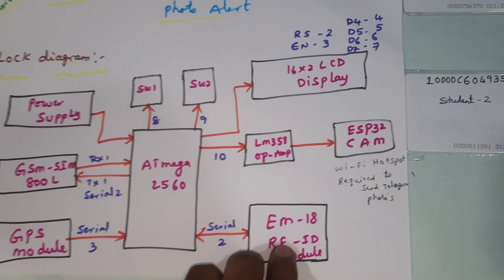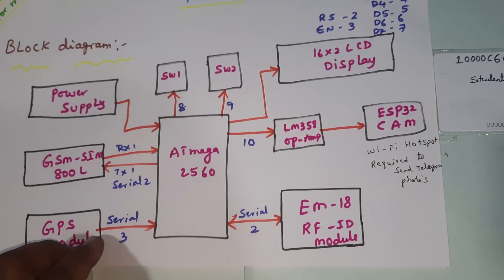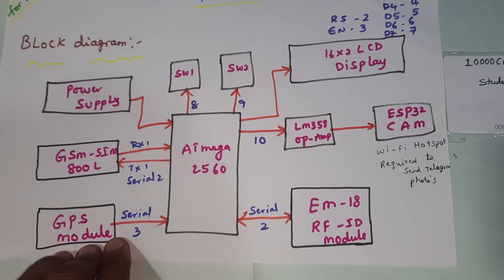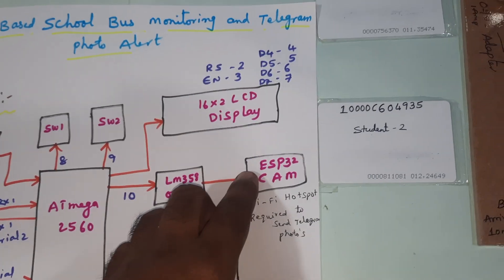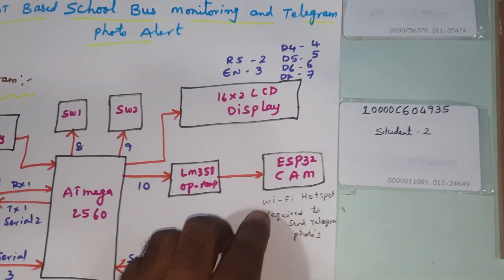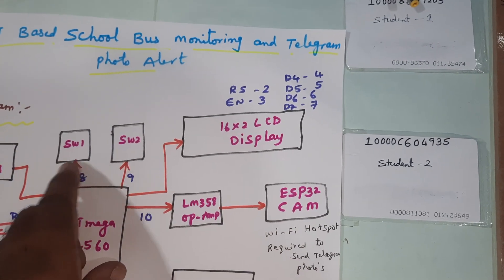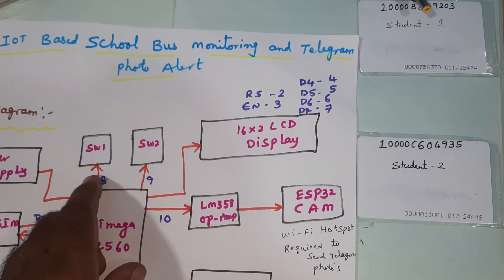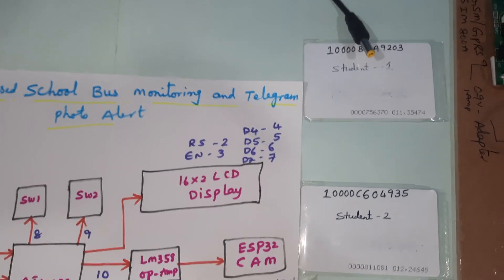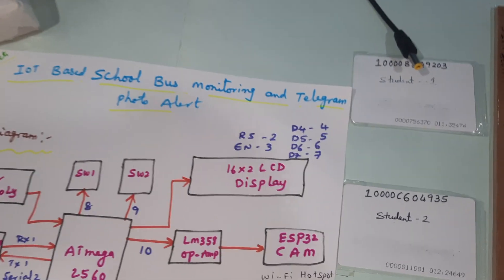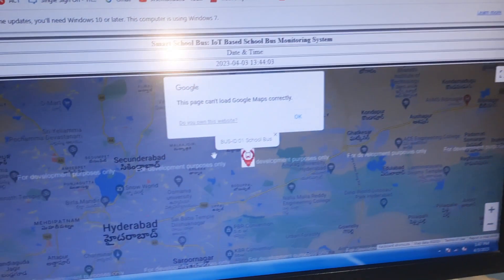We are also using a GPS module, EM18 RFID module connected via serial communication, GPS GY6M V2 module connected to serial 3, and an ESP32 camera module connected to Wi-Fi hotspot internet. There are two switch buttons: one arriving switch button and one trouble switch button, and a 16x2 LCD display.